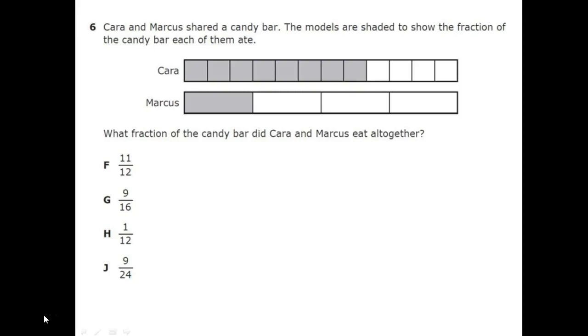Here we have an addition of fractions. It reads, Kara and Marcus shared a candy bar. The models are shaded to show the fraction of the candy bar each of them ate. What fraction of the candy bar did Kara and Marcus eat all together? Since it says all together, this is going to be an addition problem. If we look at Kara's fraction, that is 8 out of 12. Marcus's fraction is 1 out of 4.